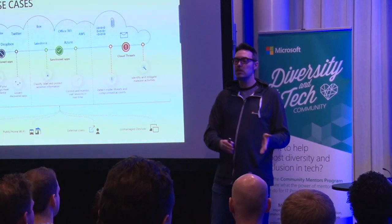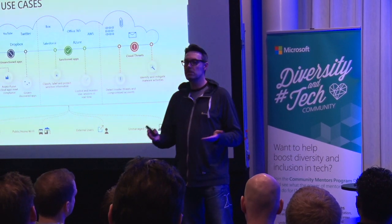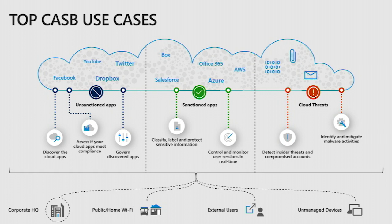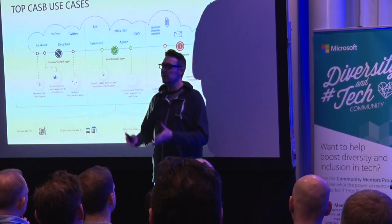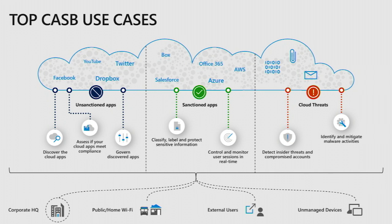Once you've identified those applications, you can triage them — selecting which should be unsanctioned, meaning IT doesn't want users using them, and moving others to a sanctioned state where IT has some control. You can switch from application authentication to single sign-on with Azure Active Directory or any IDP. For example, if you discover people are using Dropbox, move to Dropbox for Business with single sign-on so you can at least control authentication. When applications are sanctioned and provide an API, you can scan file content to identify sensitive information and apply classification and protection using Azure Information Protection.